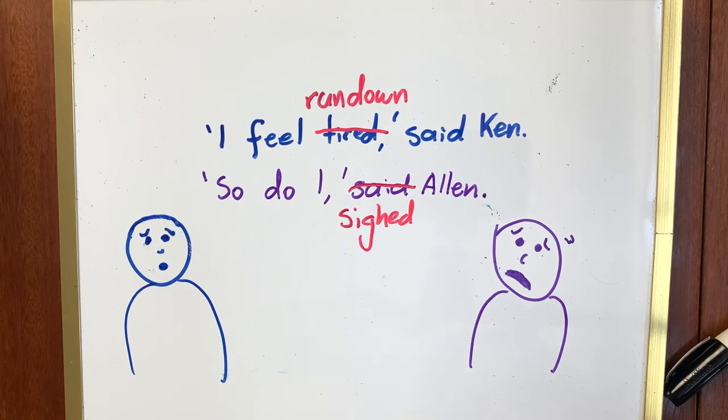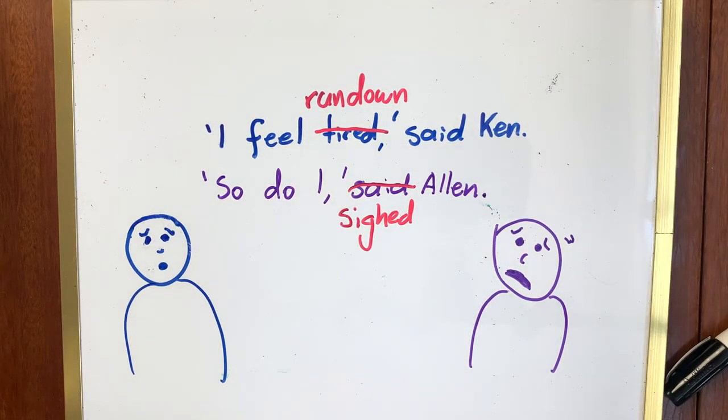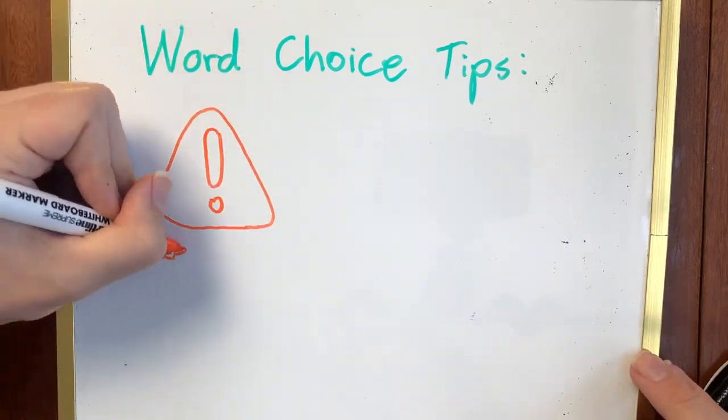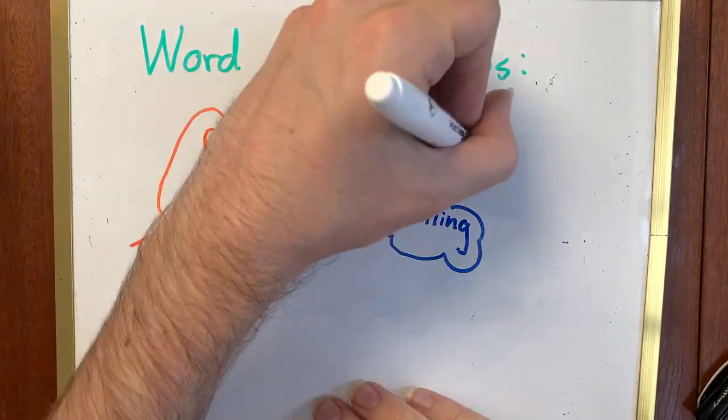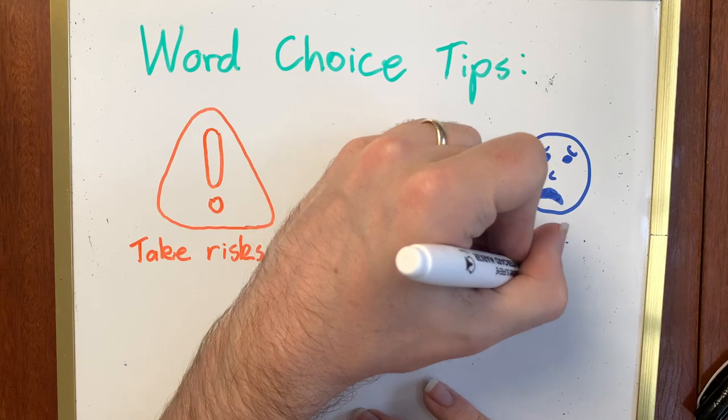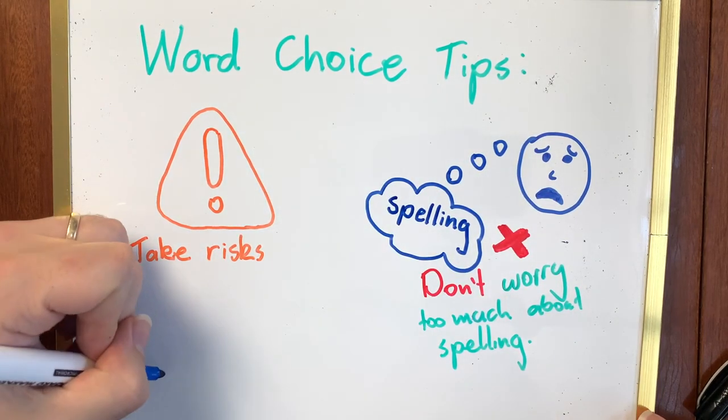Now imagine if we think about the precision of our word choice throughout our writing. I encourage you to take risks with your word choice. Don't worry about spelling everything correctly or using words for the first time. We can fix errors when we are editing.